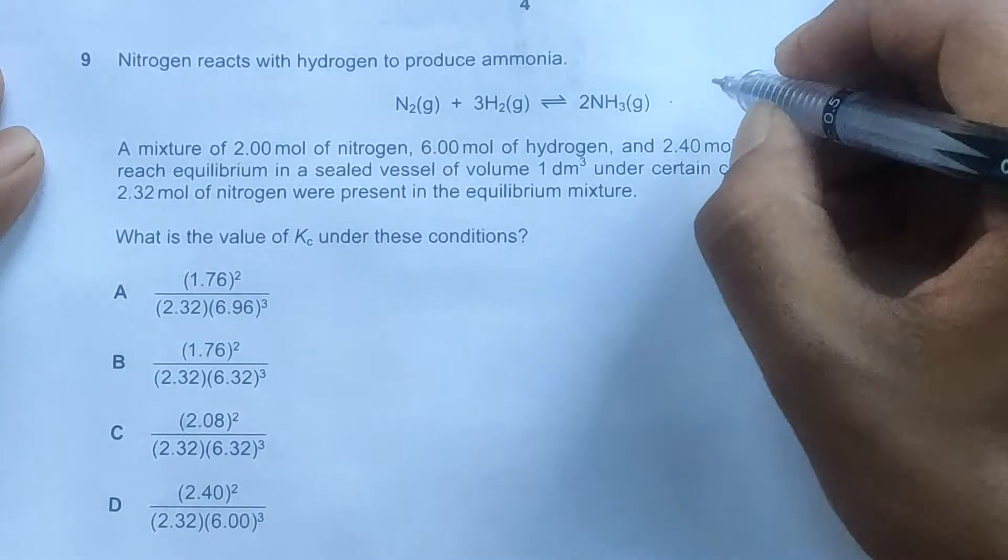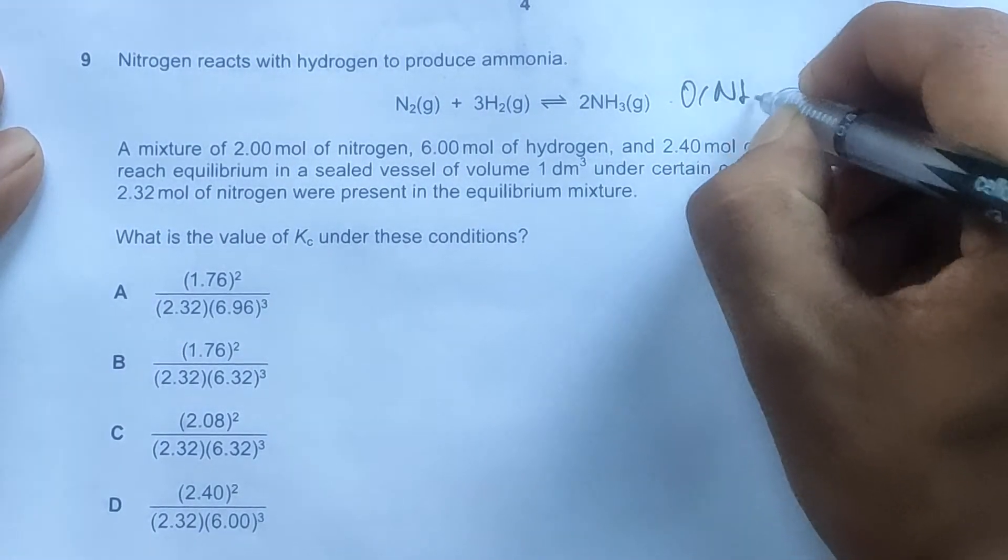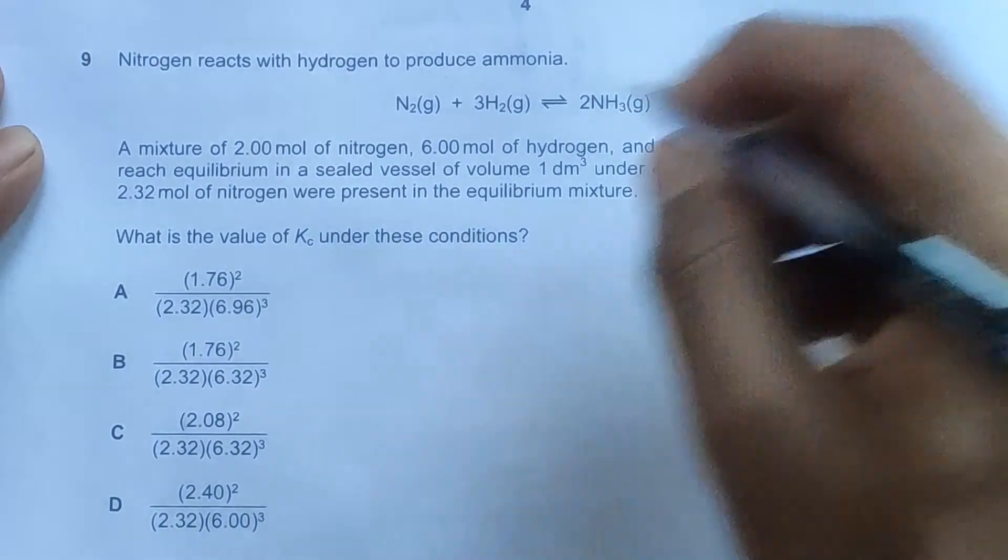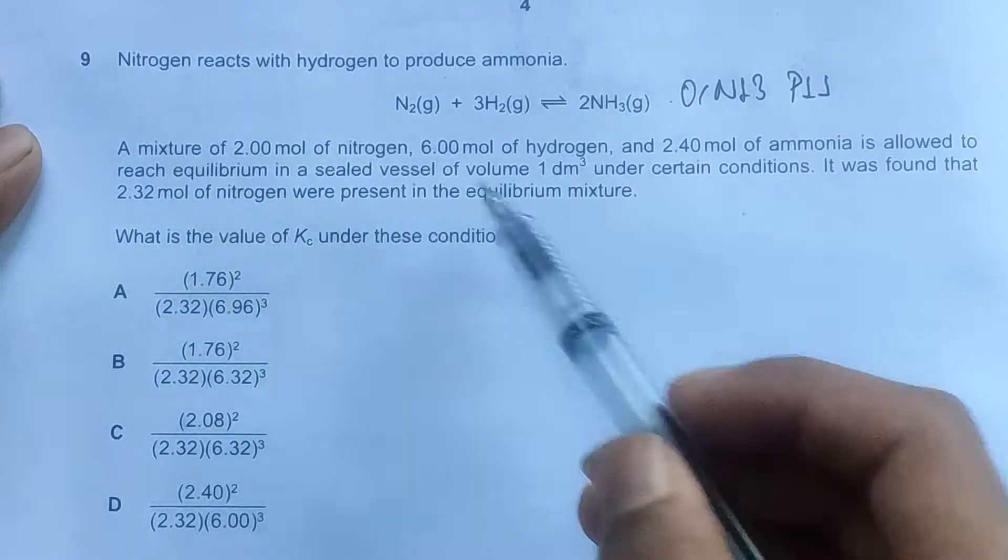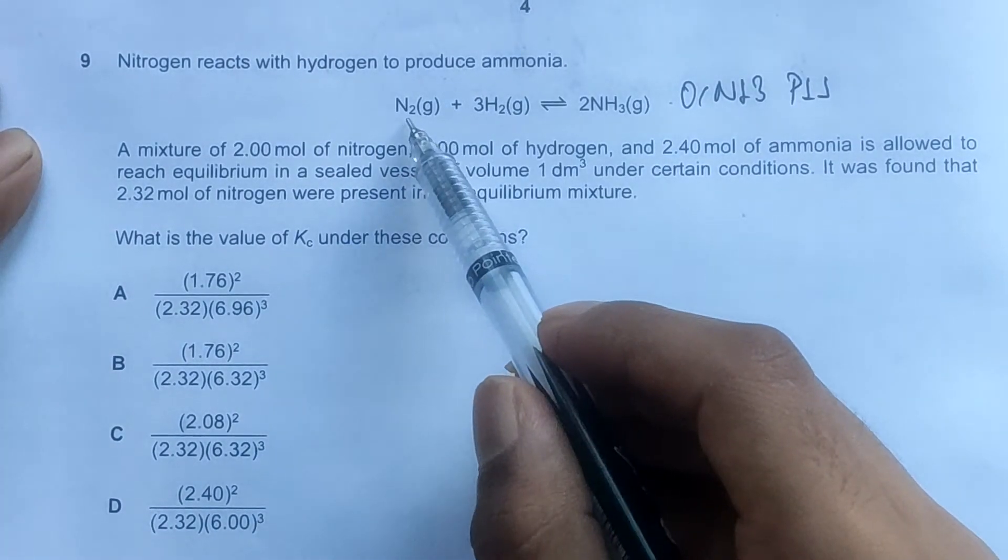Hello everyone, this is a November 13 question paper 1, question number 9. It's concerned with the chapter equilibria. The question reads: nitrogen reacts with hydrogen to produce ammonia.